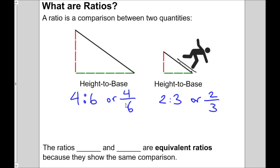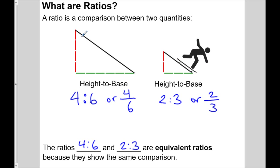By showing that the ramps are the same steepness, this means that the ratios of four to six and two to three are what we call equivalent. They're equivalent in this illustration by showing that the ramps are the same steepness and they show the same comparison.